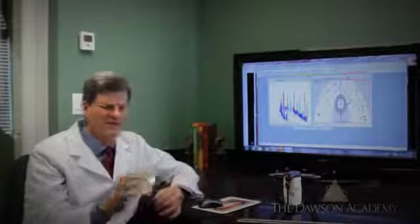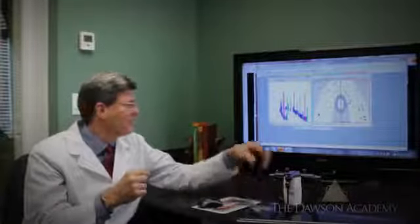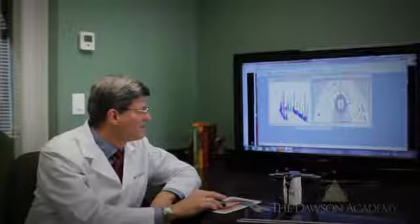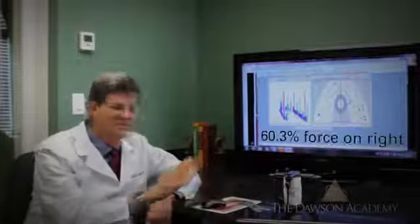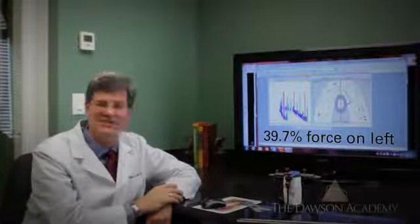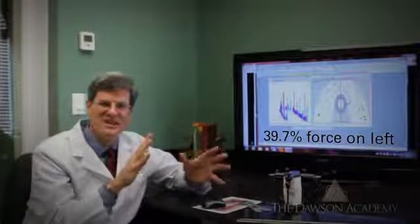Another thing we've used in our practice for a number of years is what's called a T-Scan. T-Scan is a bite wafer that measures forces as you bite onto this Mylar wafer, and it can be recorded by a computer. With that, we can then look directly on the computer screen with the patient and show them where the forces are distributed on their bite. For example, in this example, you see that 60% of the bite forces are on the right half of the bite, and only 39.7% are on the left side. The left and right sides aren't hitting evenly. We can show this to people, and they get it very quickly and appreciate and understand that.